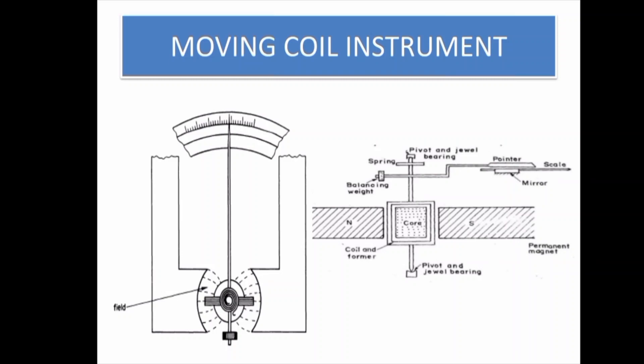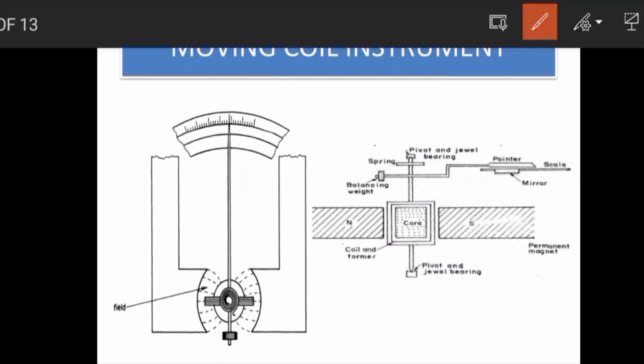The construction details of a moving coil instrument include: the permanent magnet, the coil and former, the spindle, and the pointer. The spindle connects these components and allows the pointer to move.